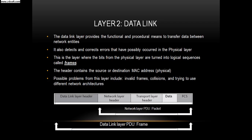The data link layer provides the functional and procedural means to transfer data between network entities. It also detects and corrects errors that may have occurred in the physical layer. This is the layer where bits from the physical layer are turned into logical sequences called frames. The header contains the source or destination MAC address. Possible problems from this layer include invalid frames, collisions, and trying to use different network architectures.